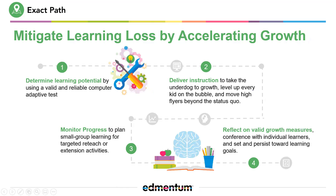We do that through an interim assessment cycle that typically runs about 12 to 16 weeks in length, starting by determining the learning potential of each learner using a single adaptive computer test to measure each student's learning needs individually and really create a growth potential for each student. We take that data and use it to target instruction to the areas of need that a student has as identified on that initial measurement.